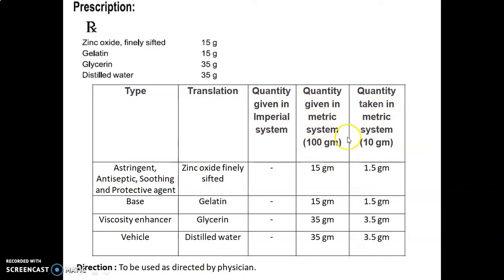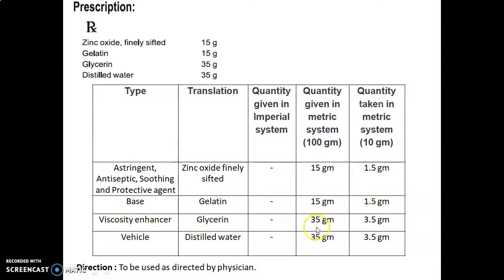Zinc oxide, finely sifted, is used as an astringent, antiseptic, soothing, and protective agent. Quantity given is 15 grams; quantity taken is 1.5 grams. Gelatin, used as a base: quantity given is 15 grams, quantity taken is 1.5 grams. Glycerine, used as a viscosity enhancer: quantity given is 35 grams, quantity taken is 3.5 grams. Distilled water, used as a vehicle: quantity given is 35 grams, quantity taken is 3.5 grams. Direction: to be used as directed by physician.